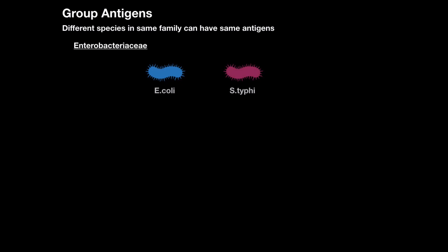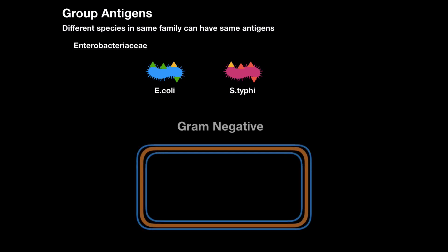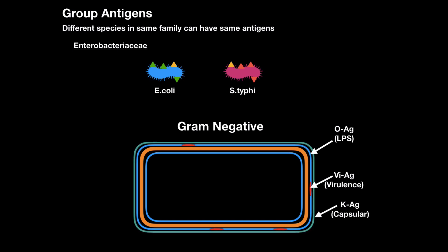Now just a quick thing about what we call group antigens. You know the family Enterobacteriaceae? E. coli and Salmonella typhi both belong to that family and both express their own peptides. But sometimes they can express the same type of antigen — and those are what we call group antigens. These are gram-negative bacteria, and what they can have in common is what we call O antigen, or lipopolysaccharides. There could be different virulence factors they have in common — those are V antigens. It could be a capsule — even gram-negative bacteria can have capsules — those are called K antigens. Or even flagella — those are called H antigens. Just think of hair antigens.